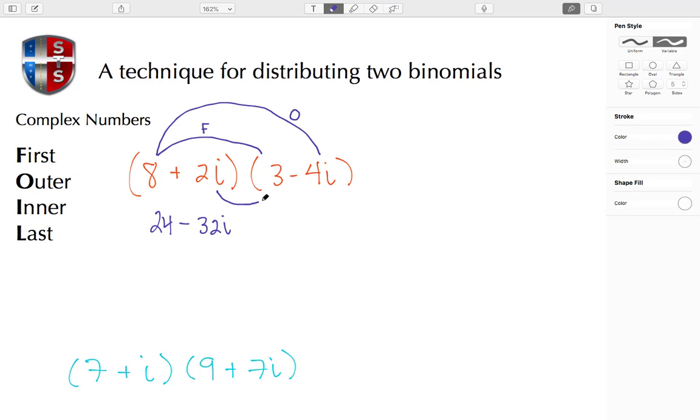Then we're going to work on the Inner two terms. So 2i times 3 gives me a positive 6i. And then we're going to work on the Last two terms, and that's going to be 2i times negative 4i, so that's going to be negative 8i squared.